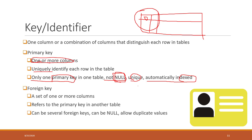The second type of key is called the foreign key. A foreign key can be one column or a combination of multiple columns. The foreign key is not used to distinguish the records in the current table. Instead, the foreign key is used to refer to the primary key in another table.